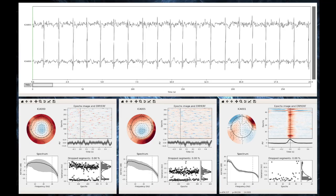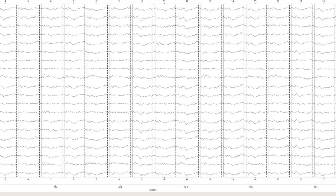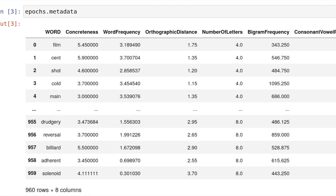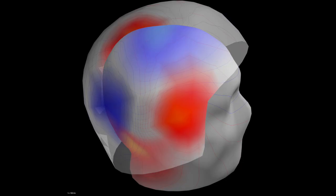You can compute independent components so you can get rid of eye and heart artifacts, cut epochs, annotate them with metadata, and study evoked activity any way you like.